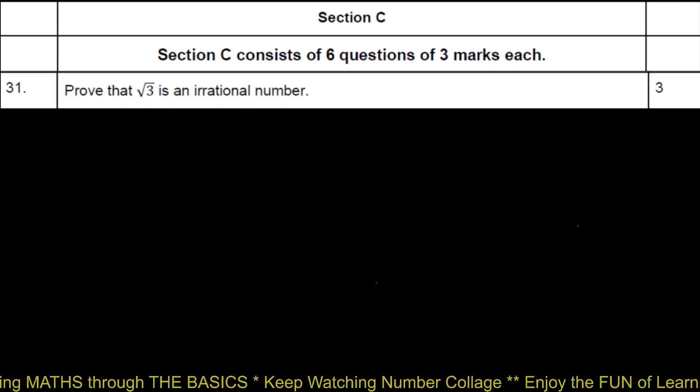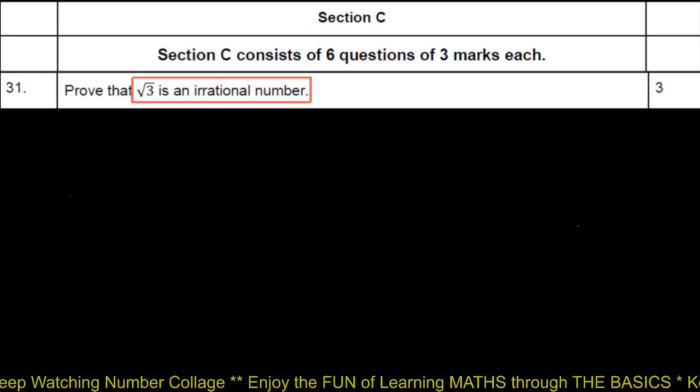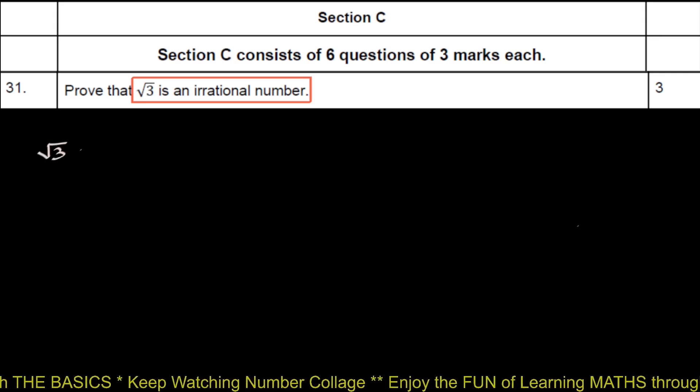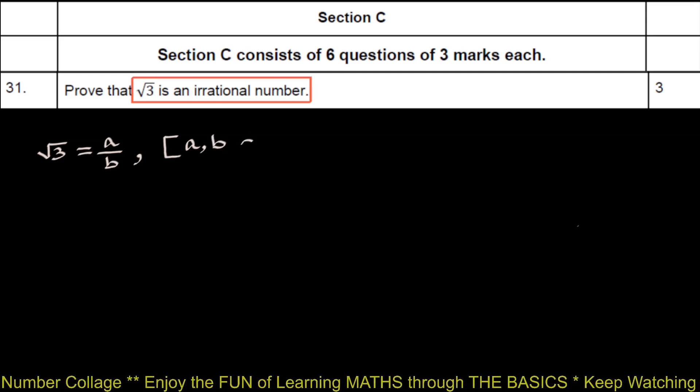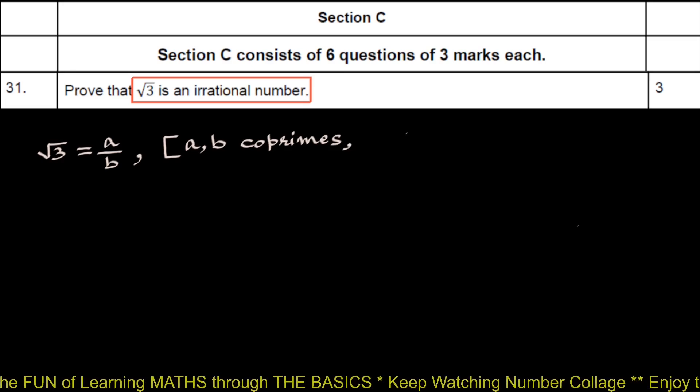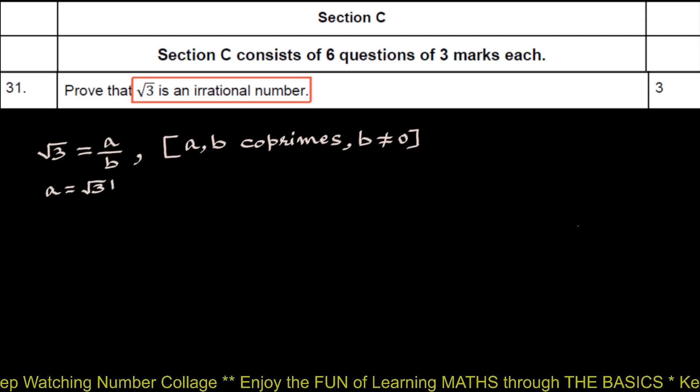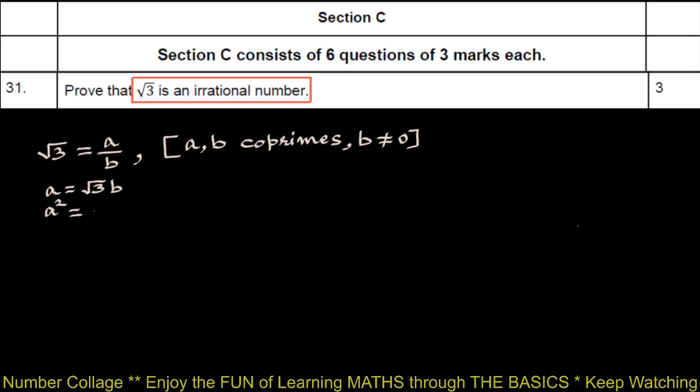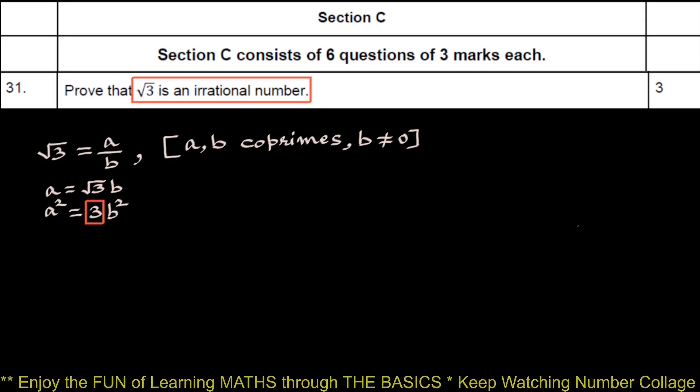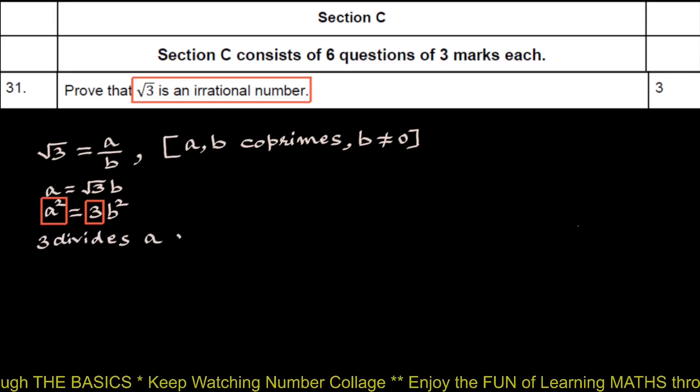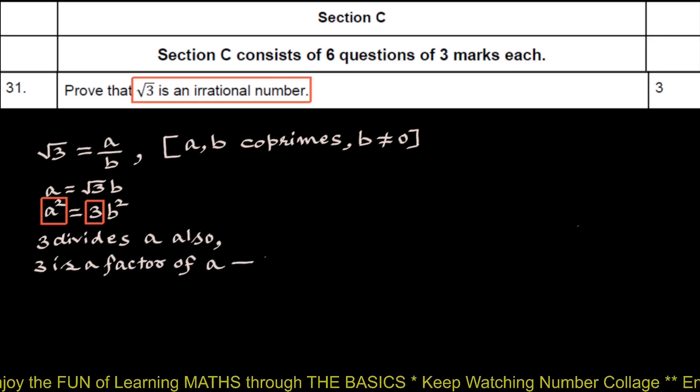We will use contradiction method to prove that root 3 is an irrational number. We will start by assuming that root 3 is a rational number A upon B, where A and B are co-primes, which means they do not have any common factors between them, and B not equal to 0. This gives A equals root 3B, squaring, A square equals 3B square. According to theorem, if 3 divides A square, then 3 divides A also. In other words, 3 is a factor of A. We will name this 1.